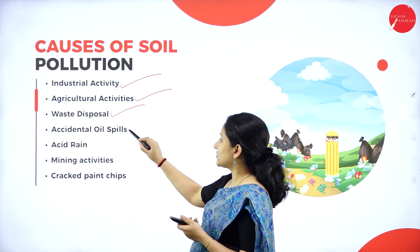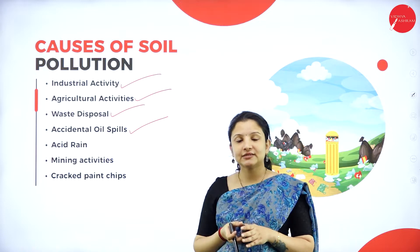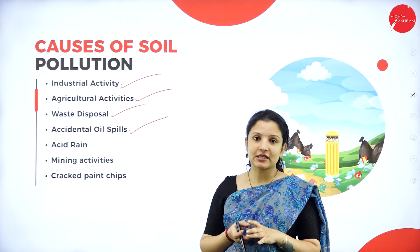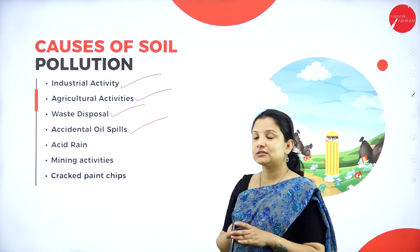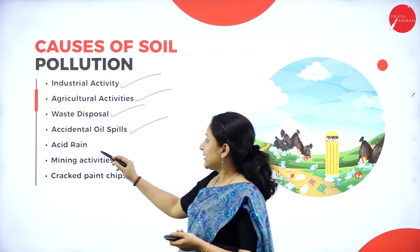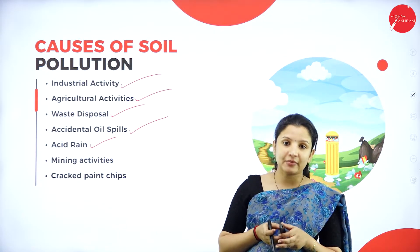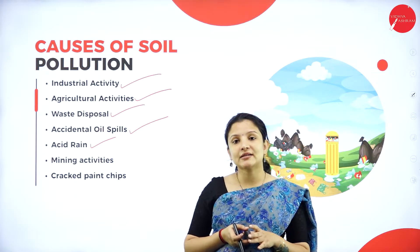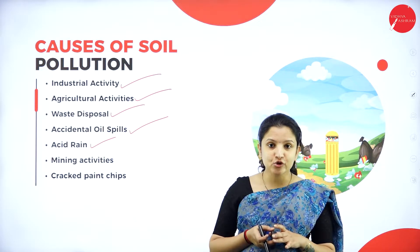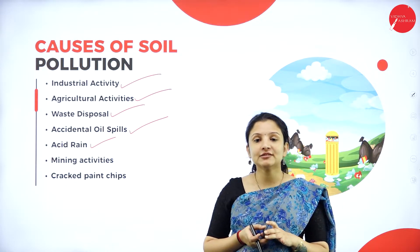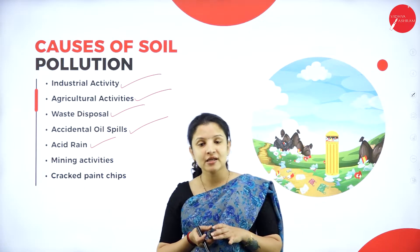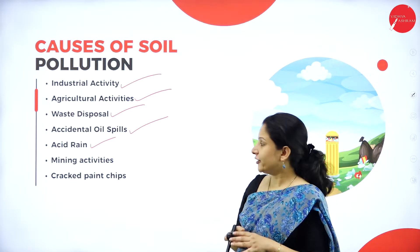Next is accidental oil spills. Just as oil spills can contaminate oceans, the spillage of oil on land can also contaminate the soil. Next is acid rain. Acid rain contains sulfur dioxide which, when it enters the soil, can kill the good microbes present there. These microbes will then not be capable of degrading waste materials in the soil, therefore leading to soil contamination.